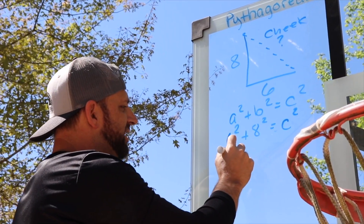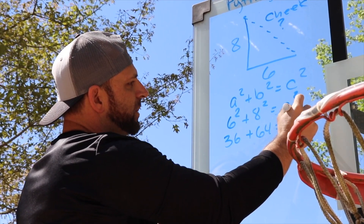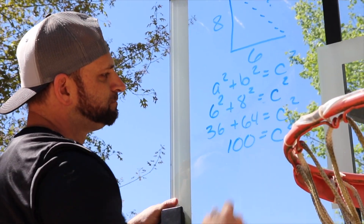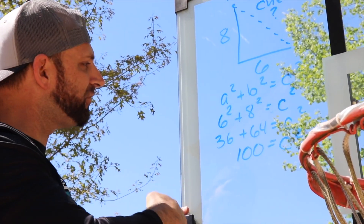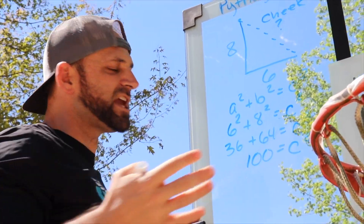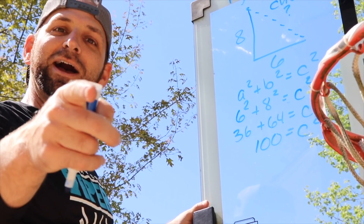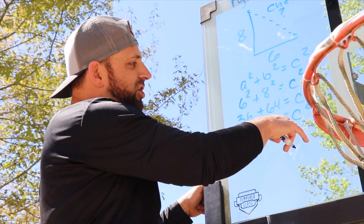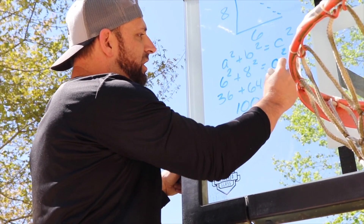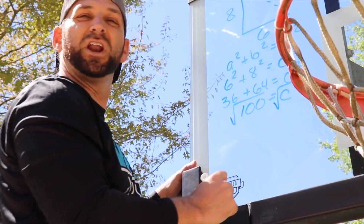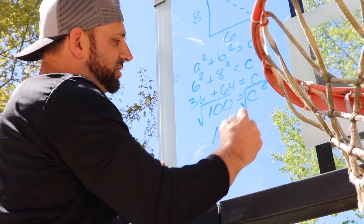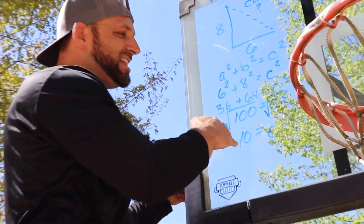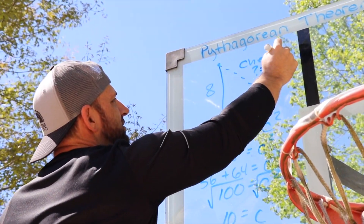We're going to square six and square eight. Thirty-six plus sixty-four gives us one hundred. Now, this goes back to solving equations involving squares. What's the opposite of squaring a number? That's right — square root. The opposite of squaring a number is taking the square root. So if I want to determine what C is, I take the square root of C squared, and I also take the square root of one hundred. So ten equals C. The distance — the peak of Coach Cheek — was about ten feet. That is how you use the Pythagorean theorem to determine the side length of a right triangle.